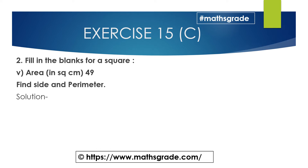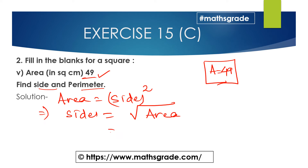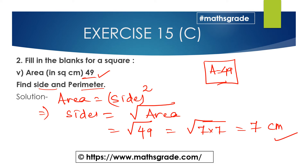Now question number five. The area of the square is given as 49 square centimeters. Find the side and perimeter of the square. We know area = side², so side = √area = √49. Since 7 × 7 = 49, the square root of 49 is 7. So the side of the square is 7 centimeters.